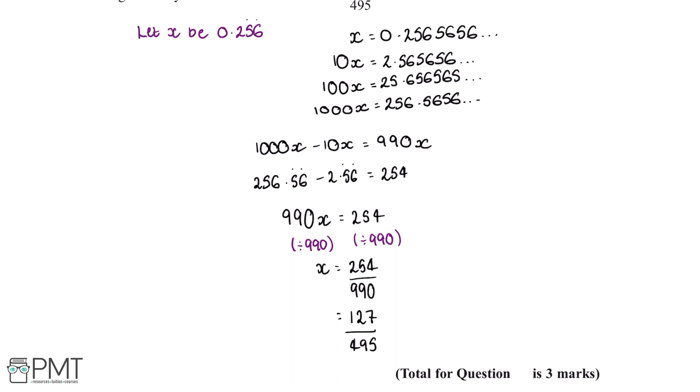Now this question is worth 3 marks. We'll get our first mark for beginning the process to find two values which have the same numbers after the decimal point. We'll get our second mark for identifying two numbers with the same value after the decimal point and minusing these from each other, and we'll get our third mark for the complete proof.